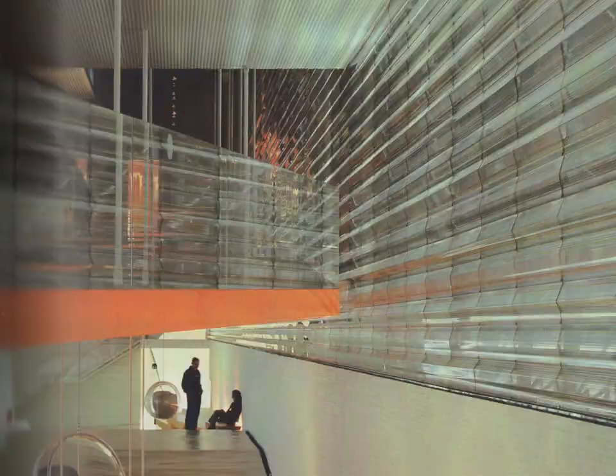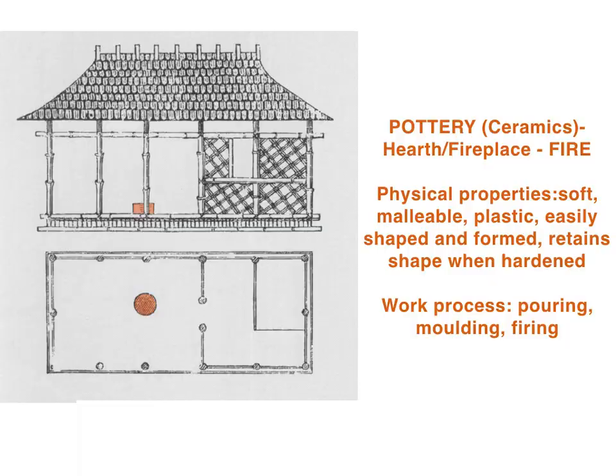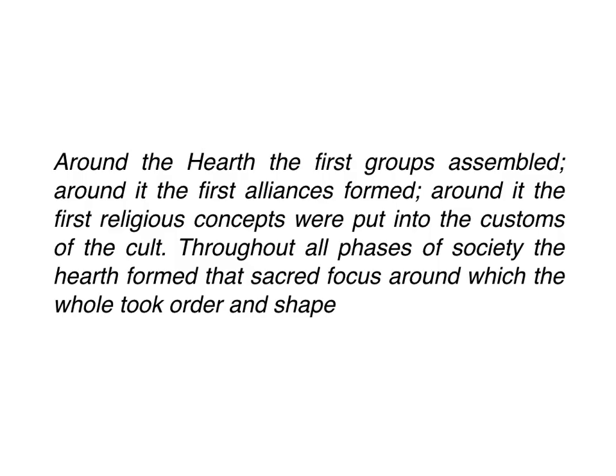Finally we come to the pottery element. In Semper's system, any hearth or fireplace is a pottery element. On the drawing the hearth is colored orange — represented by a round figure on the plan and a raised bump on the elevation. For Semper the hearth was especially important because it served as a place for formalizing social relationships. He described it as 'the locus of exchange and communication,' writing: 'Around the hearth the first groups assembled, the first alliances formed, the first religious concepts were put into the customs of the cult. Throughout all phases of society, the hearth formed that sacred focus around which the whole took order and shape.'